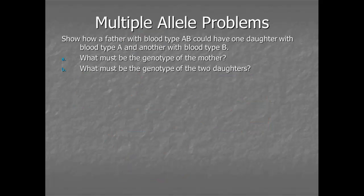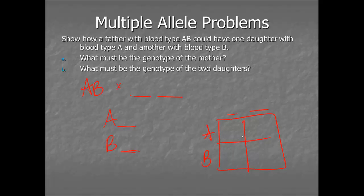Let's try another one. Show how a father with type AB blood could have one daughter with blood type A and another with blood type B. What must be the genotype of the mother, and what must be the genotypes of the daughters? So the father is AB, the mother is unknown, and their children are A and B. We're not sure if the children are homozygous dominant or heterozygous. Notice for these problems I'm not writing a key, because the blood typing patterns are always the same. Let's put this on a Punnett square. The father is AB, the mother is unknown, and I have to be able to get A and B children. The first thought is the mother could probably be OO, because then I could have A children or B children.